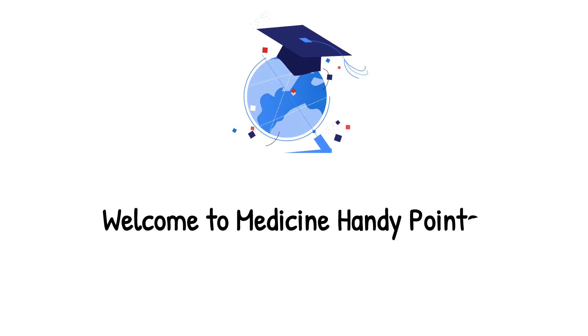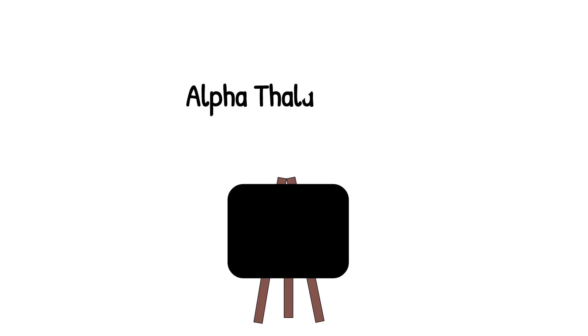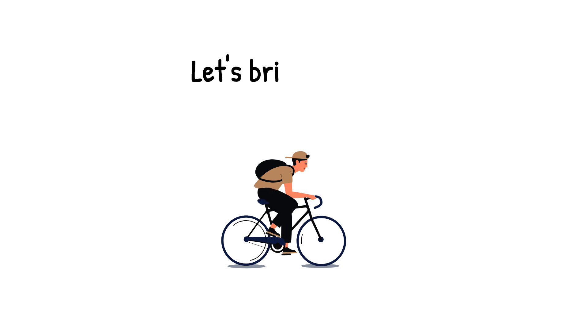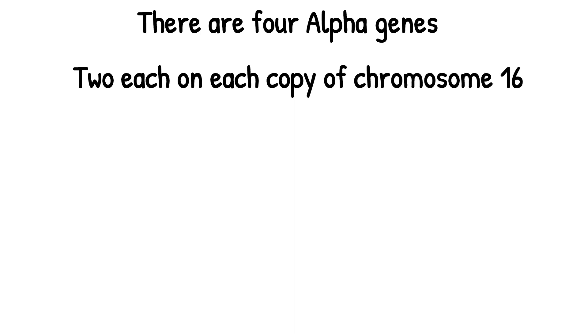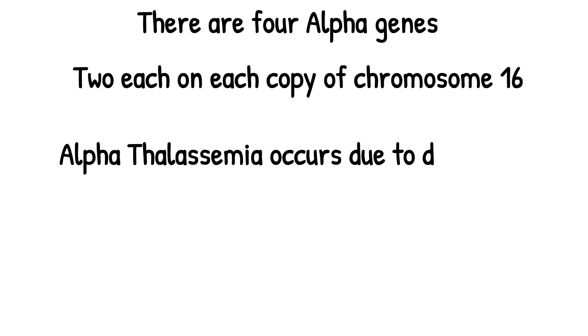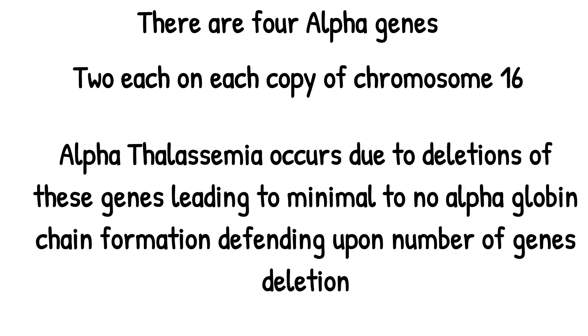Welcome to Medicine Handy Point. Our topic is alpha thalassemia. There are four alpha genes, two on each copy of chromosome 16. Alpha thalassemia occurs after deletion of these genes.